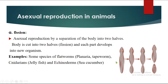Here I have taken the example of a planaria. In this picture you can see the planaria — the body is divided into two halves and each half is going to grow into a new organism. Other examples are species of flatworm; I already mentioned planaria and tapeworm. Cnidarians — phylum Cnidaria like jellyfish — and from phylum Echinodermata, sea cucumber. These are the species which reproduce by the process of fission.